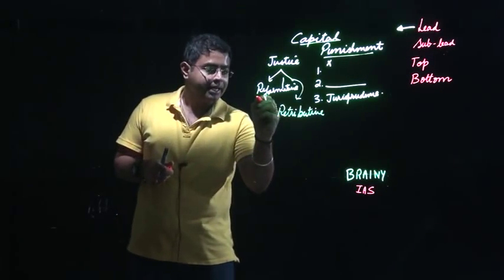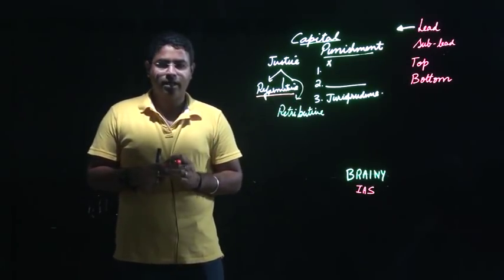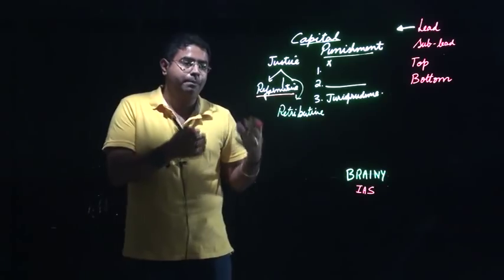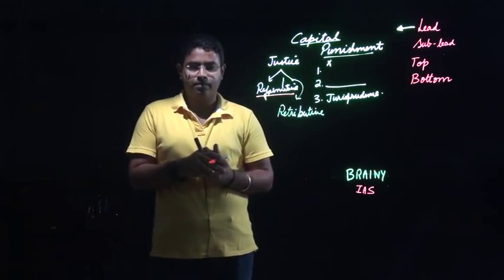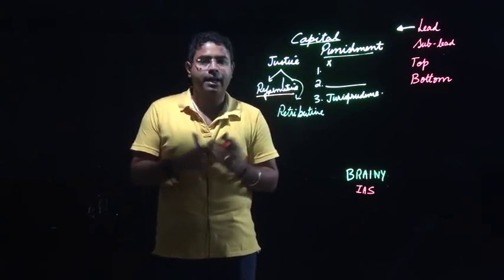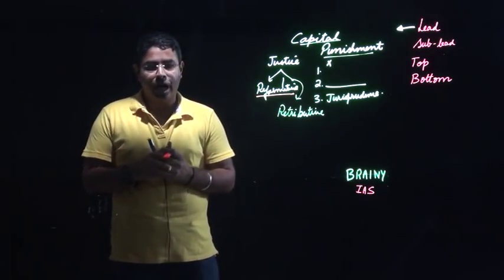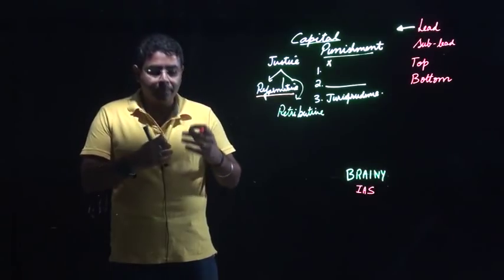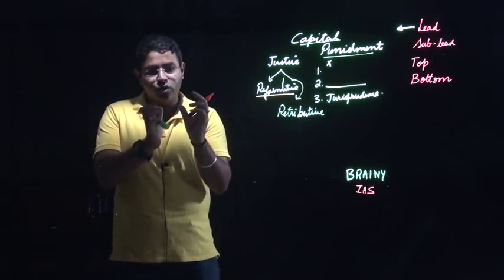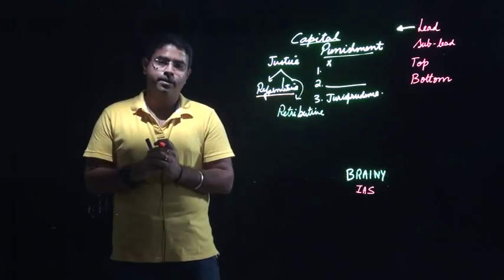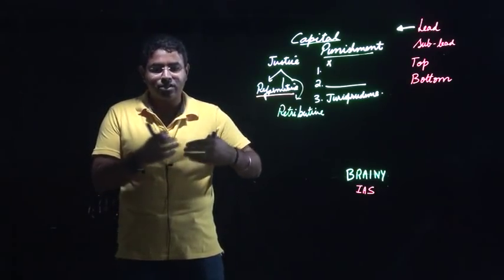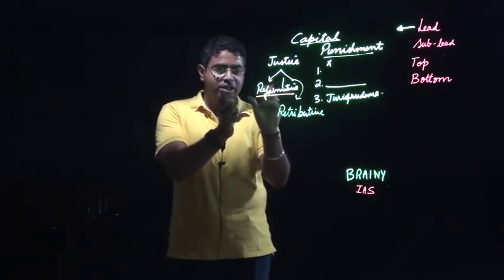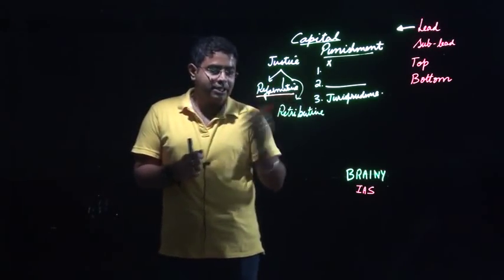Reformative justice means that if you have made a mistake, the law gives you a chance to correct your mistake in the future. This is reformative kind of justice system - you are given a chance, a small punishment is given, and jurisprudence believes that you will reform from that small punishment and after reforming you can join the mainstream of society.